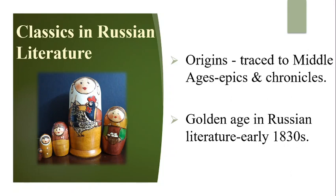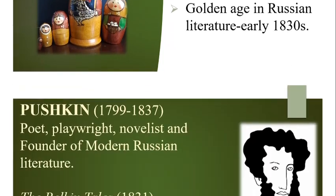Please try to remember the names of the authors and at least one famous work written by each author. The first author is Alexander Pushkin, 1799–1837. Pushkin was a Russian poet, playwright, and novelist of the Romantic era in Russian literature. He is considered to be the greatest Russian poet, and critics also call him the pioneer or the founder of modern Russian literature. Common works include The Belkin Tales, published in 1831, The Queen of Spades in 1834, and The Captain's Daughter in 1836.